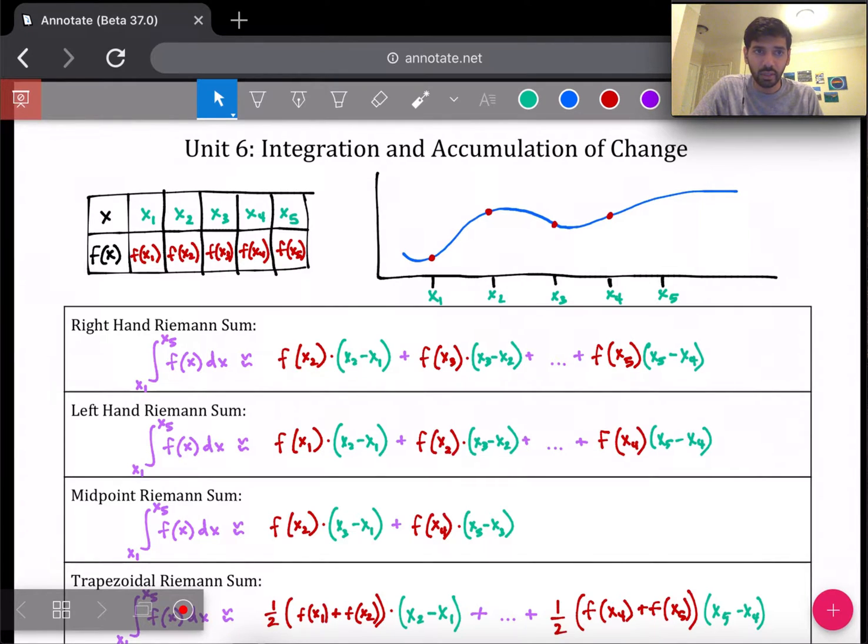The first thing in unit six, we're talking about applications of integration. And the very basic application of integration is finding the area underneath the curve. And so to first understand what an integral is, we have to understand how to approximate that area. And so the first four sections here are talking about Riemann sums. So approximating the area using rectangles or a trapezoid. So I've already filled in the formulas for each of these.